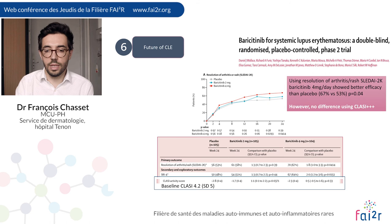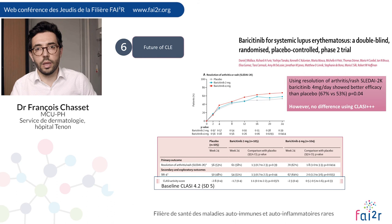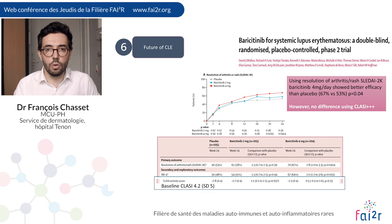The JAK inhibitors, in particular baricitinib, recently showed efficacy compared with placebo in a phase 2 trial. Using the resolution of arthritis and rash SLEDAI score, baricitinib at 4 mg per day showed better efficacy than placebo. However, no differences were observed using the CLASI score, and in my opinion no conclusion can be drawn from this study — phase 3 studies are needed to conclude.